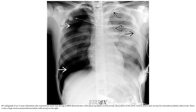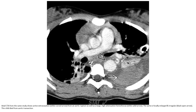AP radiographs of an 11-year-old patient who sustained an aortic tear during a motor vehicle accident demonstrate an apical cap, obscuration of the aortic contour, and a mediastinal hematoma. The CT also shows a large high-attenuation hematoma at the aortic tear during a rib fracture. The aorta is poorly defined and irregular. This child died from aortic transection.